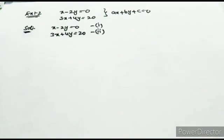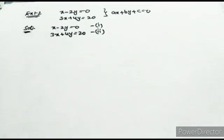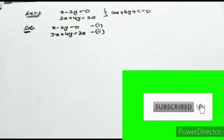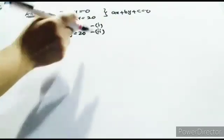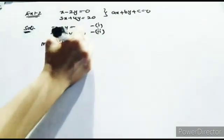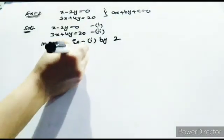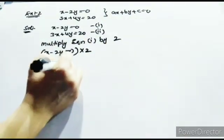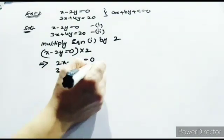The next step is to make the coefficient of one variable equal by multiplying with a suitable real number. We are making the coefficient of y the same. Equation 2 has 4y and equation 1 has 2y, so we multiply equation 1 by 2. This gives 2x minus 4y equal to 0. Equation 2 remains 3x plus 4y equal to 20.